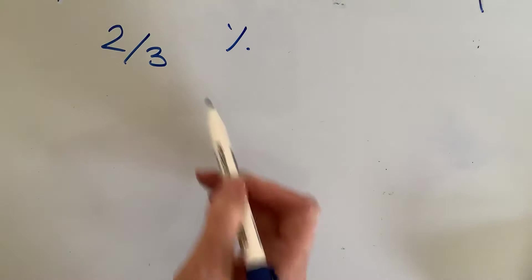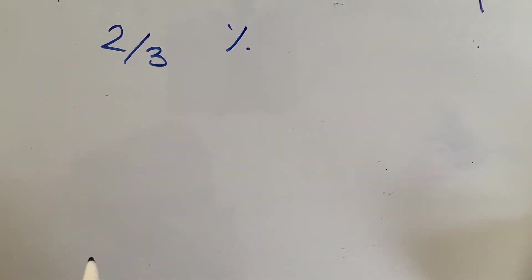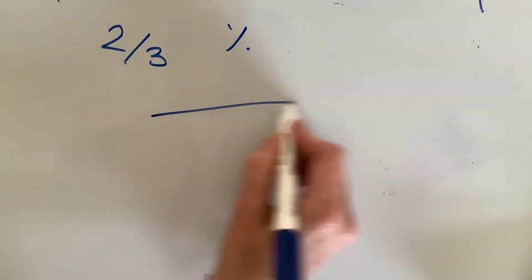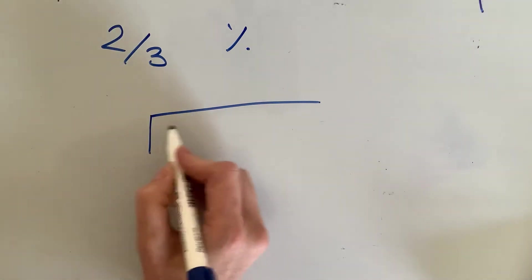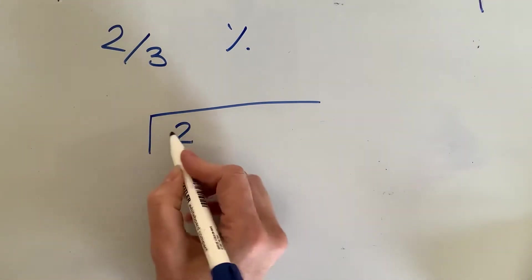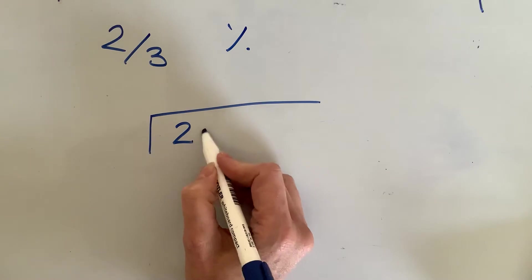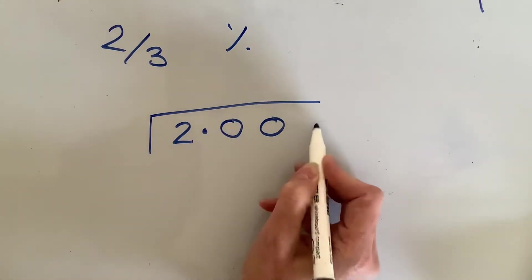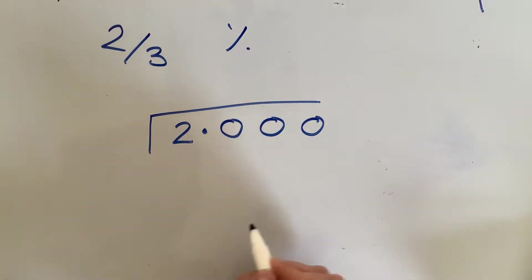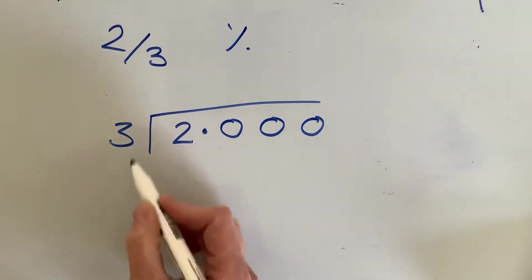You need to work that out. To do that, we do top number divided by bottom number. Draw my bus stop, top number goes in there. I know it's just not going to be straightforward, so I'm going to put the decimal point in and fill it up with some zeros, and my 3 goes on the outside.